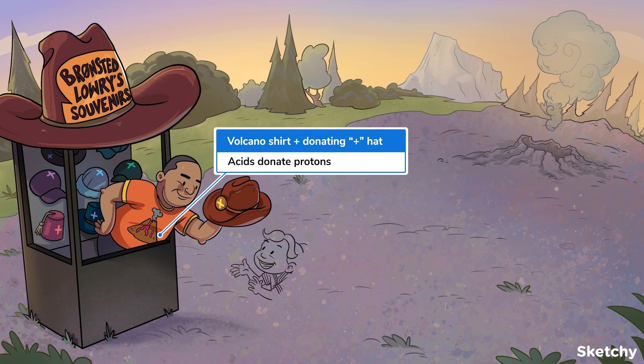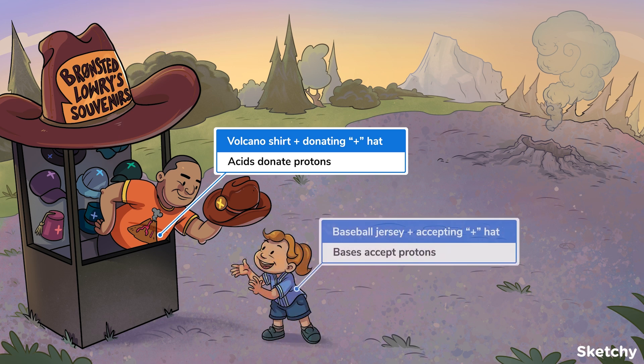And on the receiving end is this little tyke. This kid in the baseball jersey gleefully accepting the hat represents how a Brønsted-Lowry base accepts a proton. I really hope this isn't one of those "you wear it, you buy it" scams.